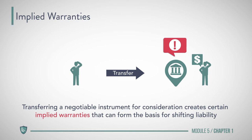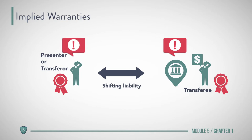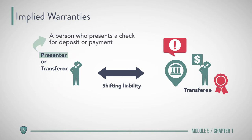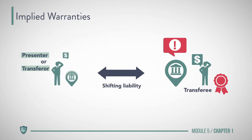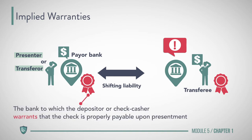Transferring a negotiable instrument for consideration creates certain implied warranties that can form the basis for shifting liability. A transferee will want to shift his liability on an instrument back to a presenter or transferor if the transferor breaches one of the Code's implied warranties. A presenter is a person who presents a check for deposit or payment, while a transferor transfers an instrument to another party. With respect to checks, the drawee of the check is also known as the payer bank, and it is this bank to which the depositor or check casher warrants that the check is properly payable upon presentment.